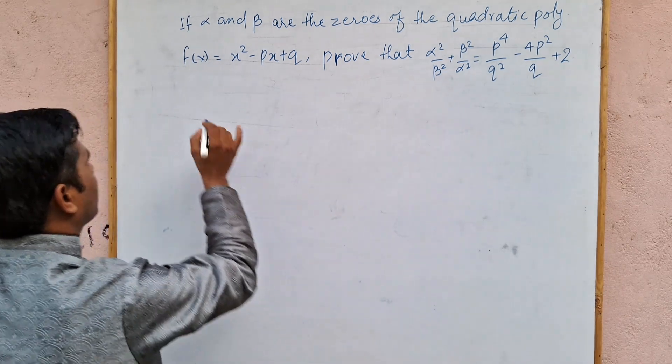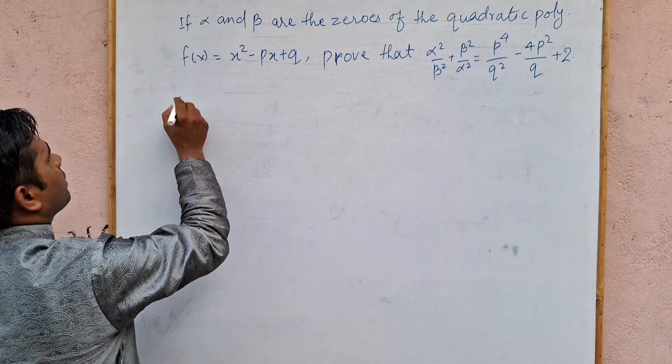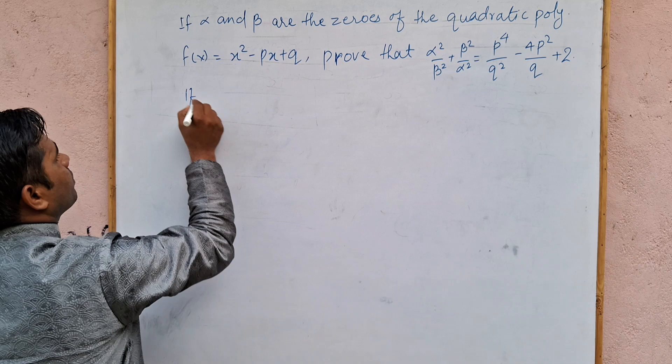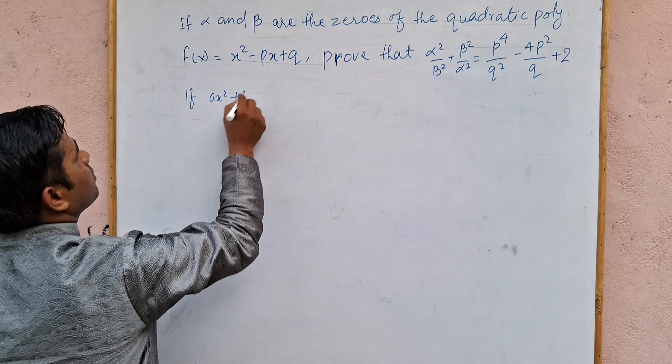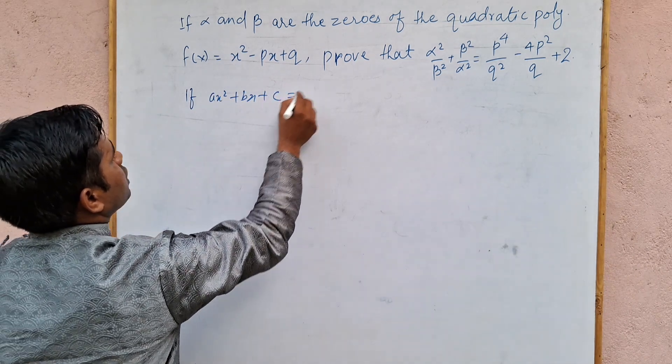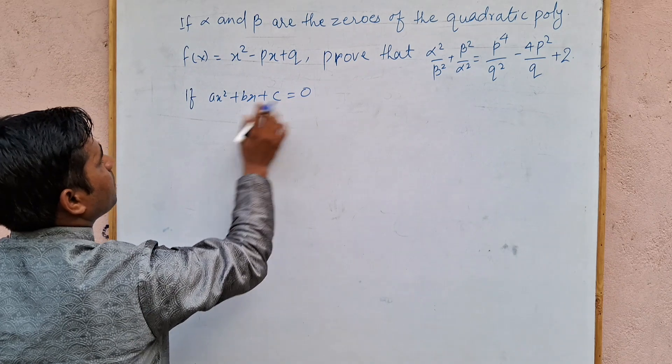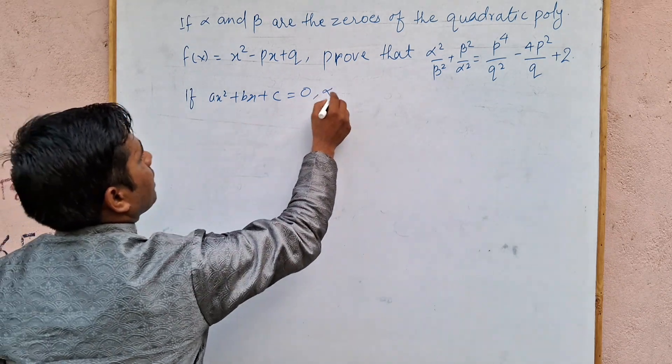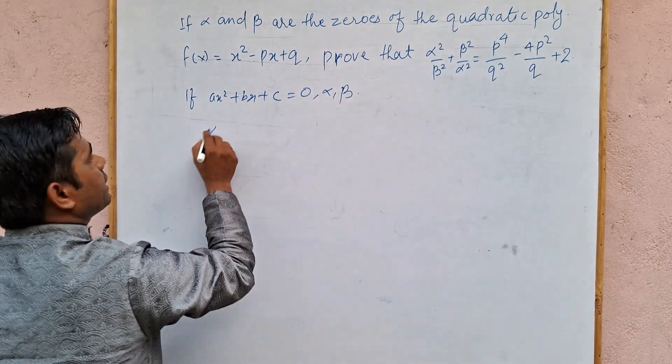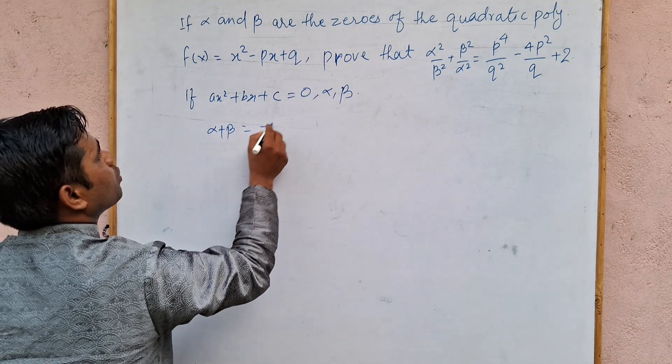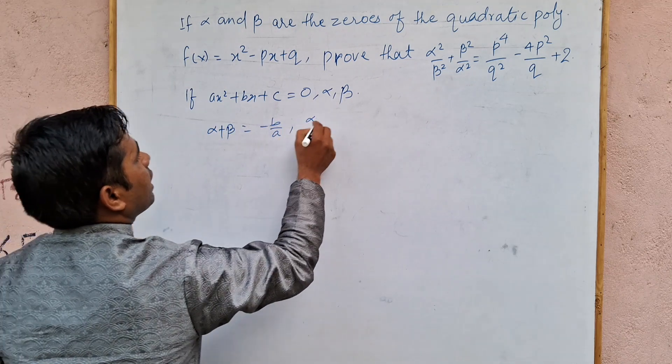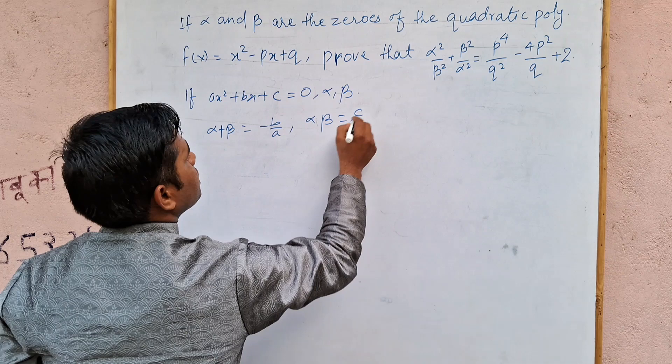So first we have some identity. If ax square plus bx plus c is equal to 0, this is quadratic equation. If alpha and beta are zeros, then what happens?